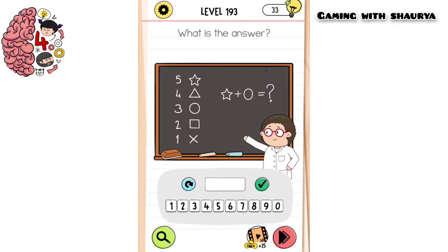Hey guys, please subscribe to my YouTube channel Gaming with Shawre for more solutions. Brain Test level 193: what is the answer? So on the left side of this board there are values given of the symbols.